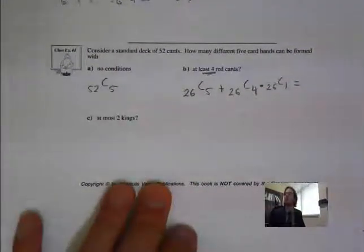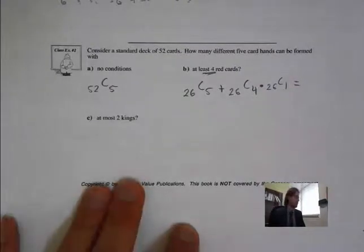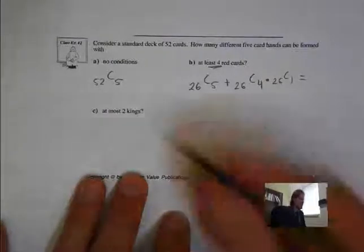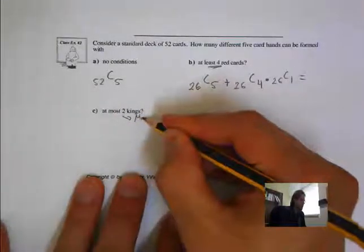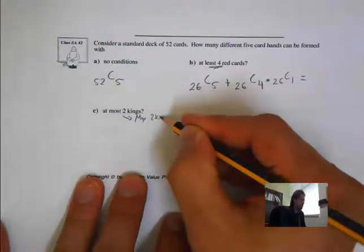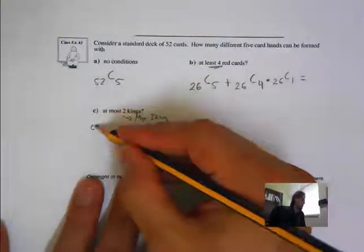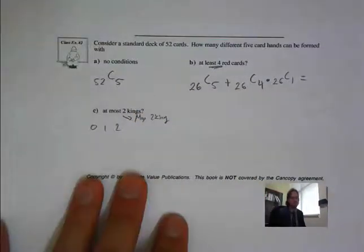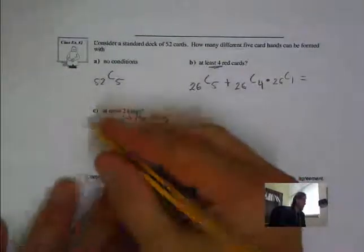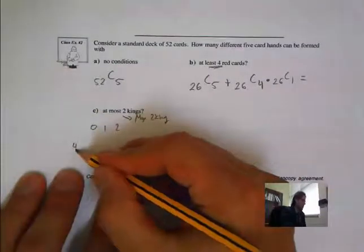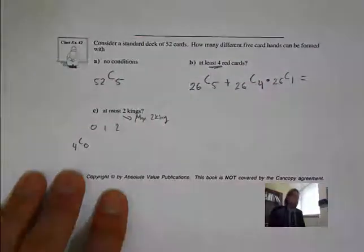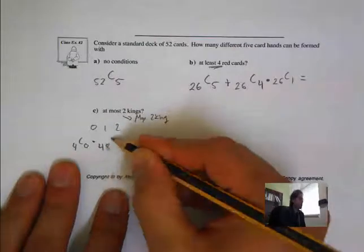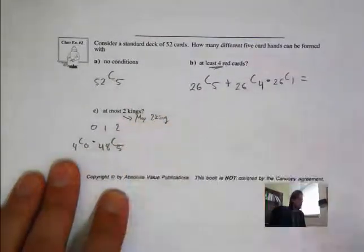The next question says: at most 2 kings, so a maximum of 2 kings. My options are: 0 kings, 1 king, or 2 kings. If I look at 0 kings, that's 4C0, multiplied by — there are 48 other cards — we're choosing 5 from those 48. So 4C0 × 48C5.